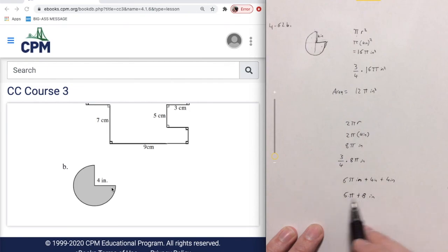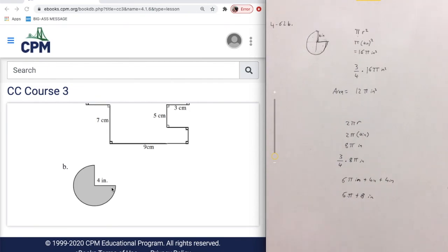If you add these together, we're going to end up with 6 pi plus 8 inches, because you can't really combine these two, because the 6 is being multiplied by pi. If you're doing this on a calculator, you can put in a value for pi, about 3.14, and you can get it as one whole number.